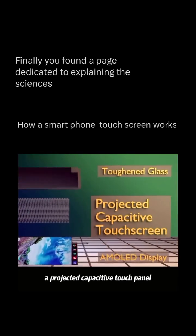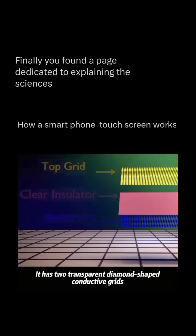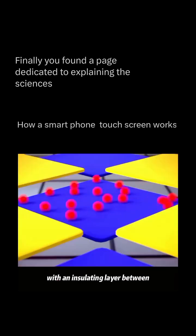The middle layer is the core, a projected capacitive touch panel. It has two transparent diamond-shaped conductive grids with an insulating layer between.